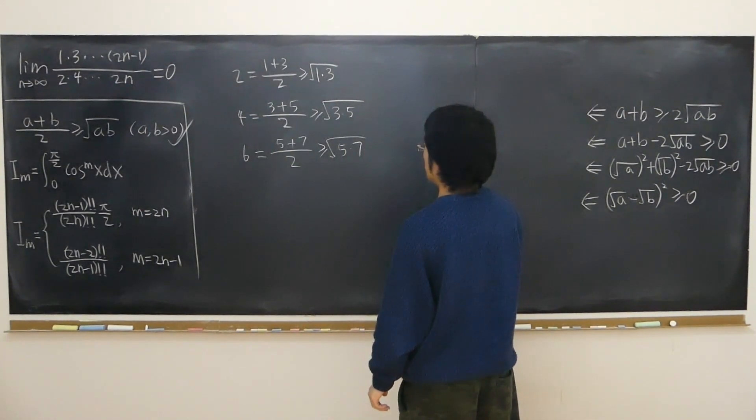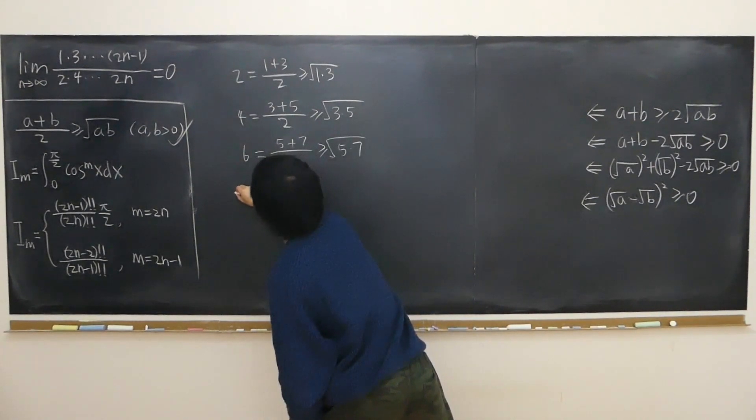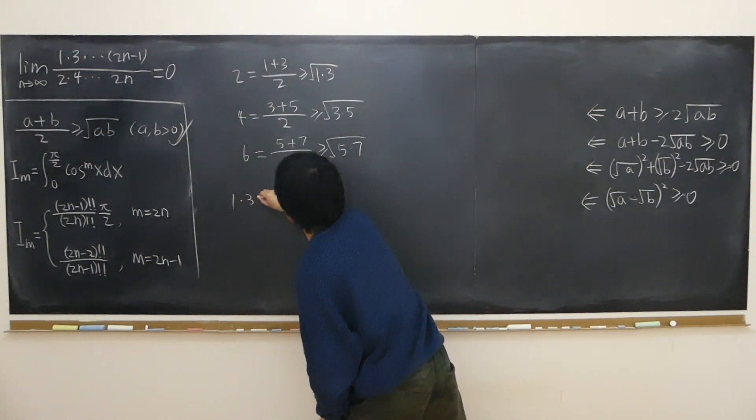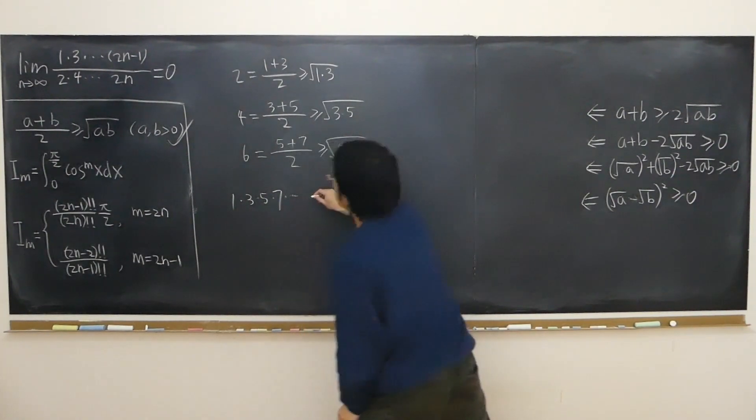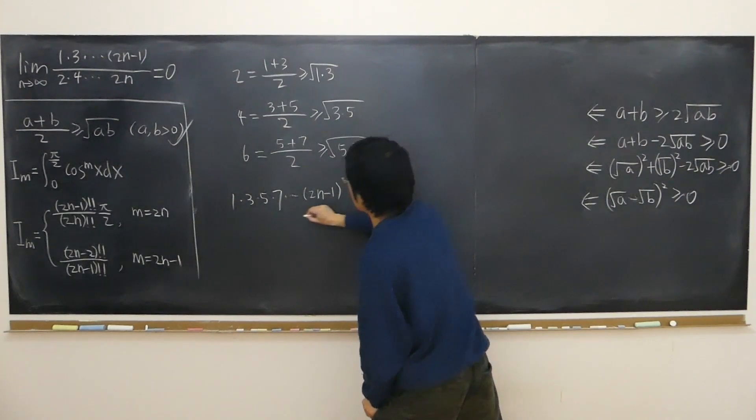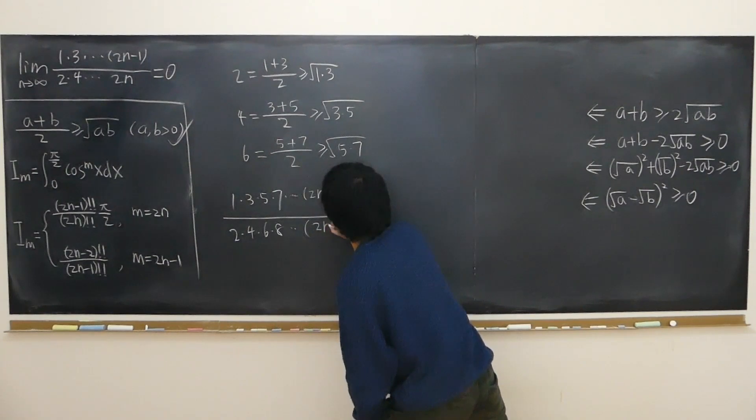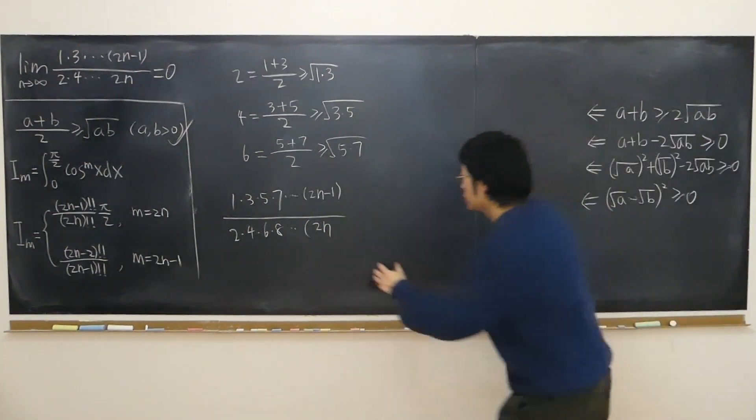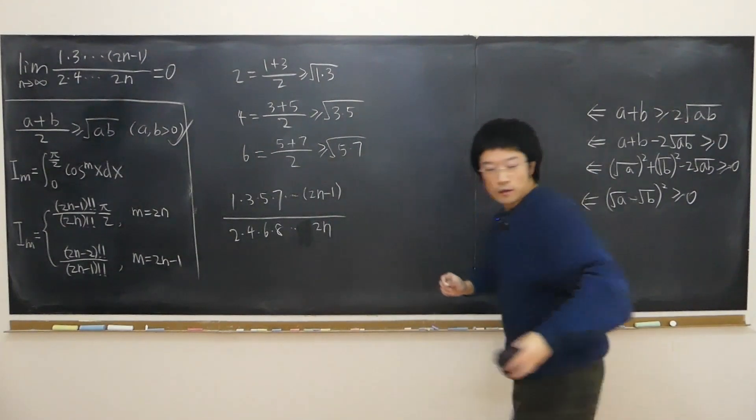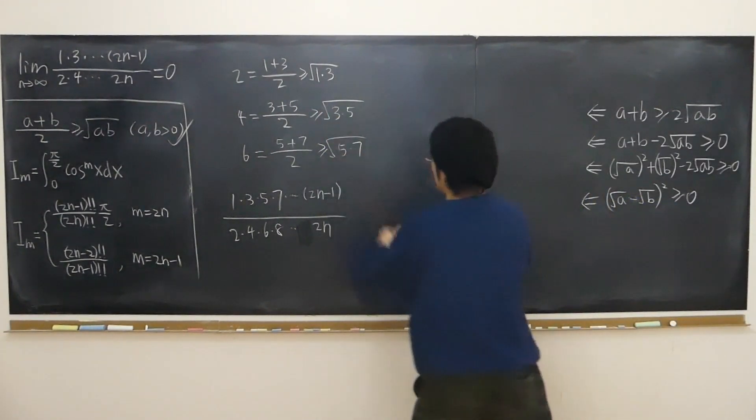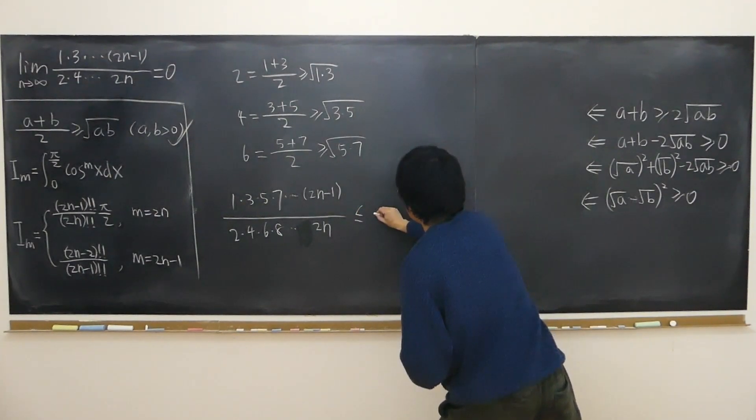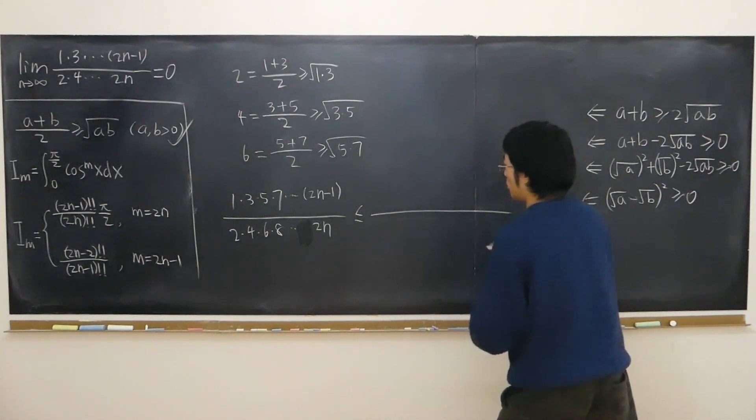So in fact that expression must be written as 1 times 3 times 5 times 7 all the way up to 2n minus 1, over 2 times 4 times 6 times 8 all the way up to 2n. I must change the direction of the inequality, this is less than or equal to.